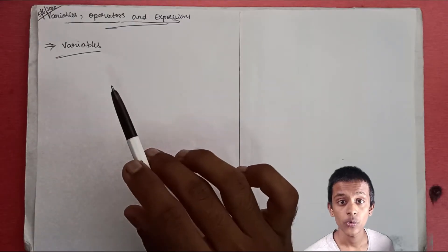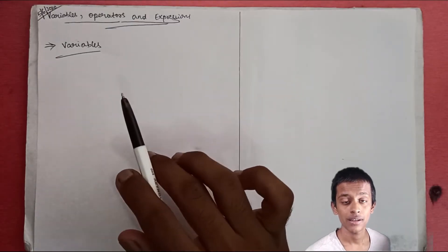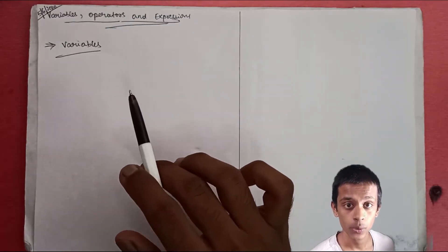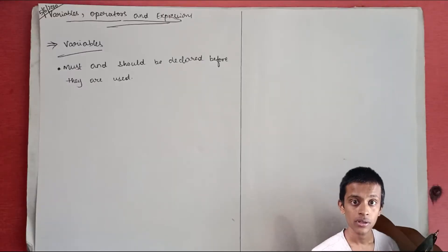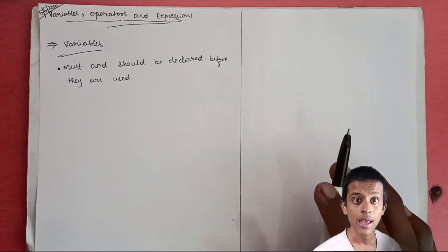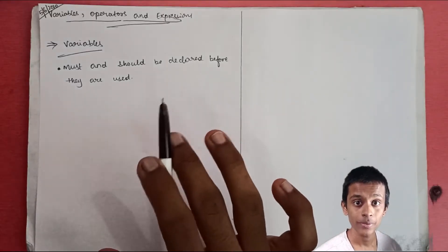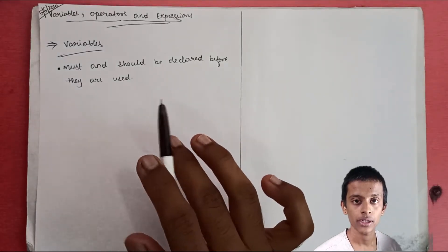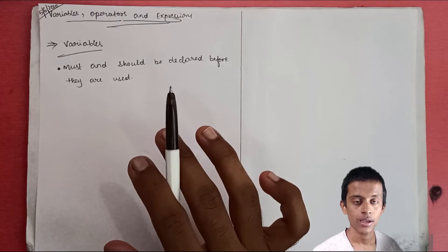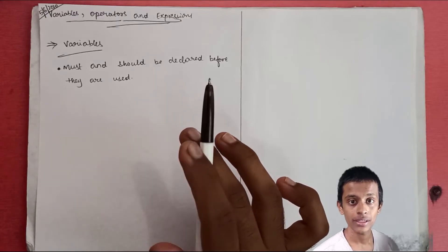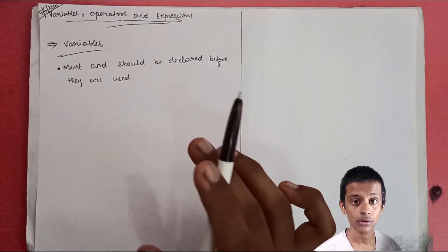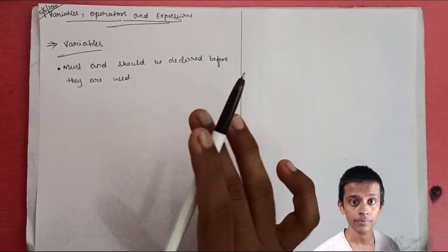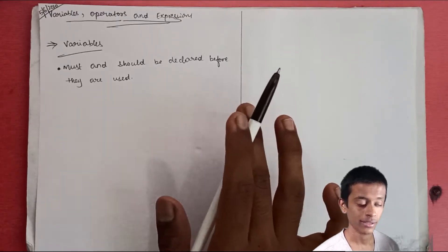Let's discuss variables in the C programming language. In C, all variables must be declared before they are used. They are usually declared at the start of the function, or at the start of the program after the header part, before any executable statement.